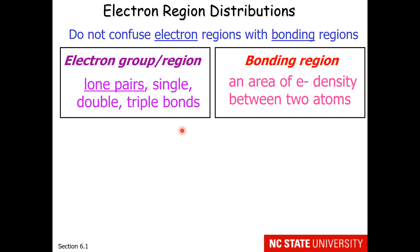Now one caution as we go into these structures. Please do not confuse electron regions with bonding regions. Electron regions include lone pairs, single, double, and triple bonds, which are areas of electron density between two atoms.